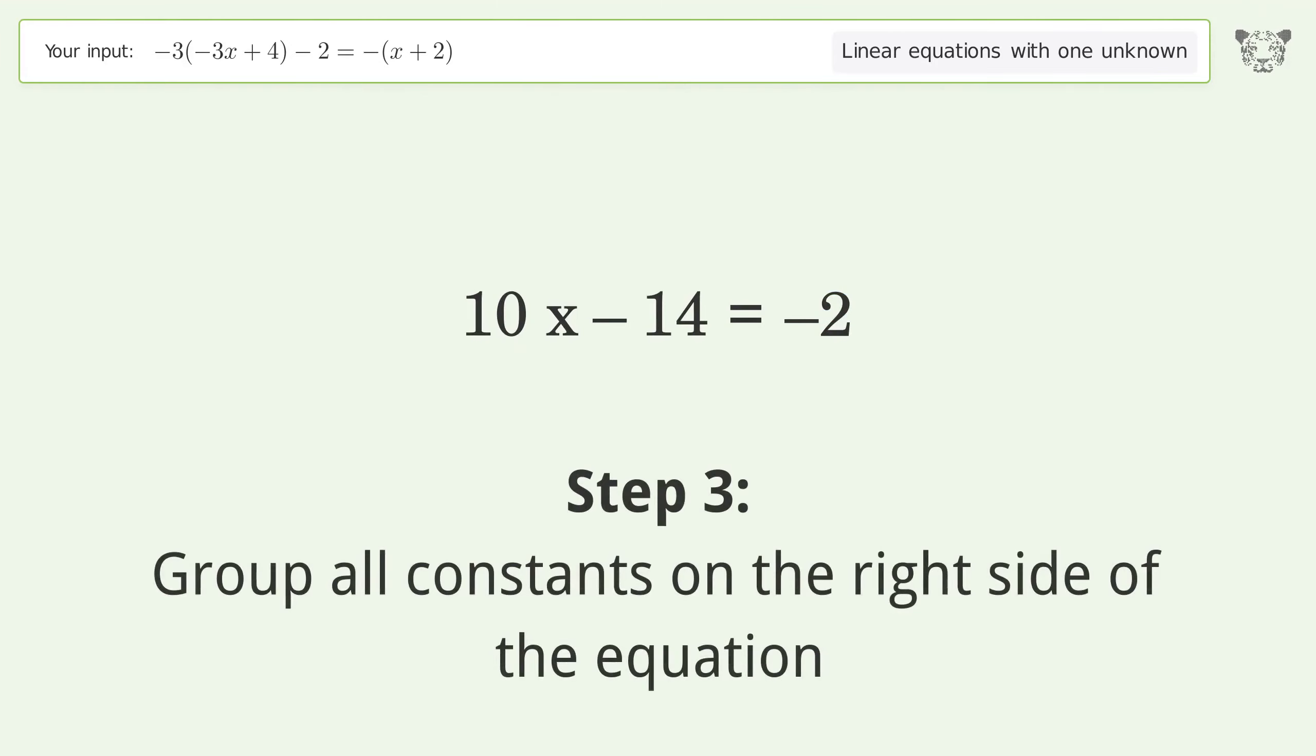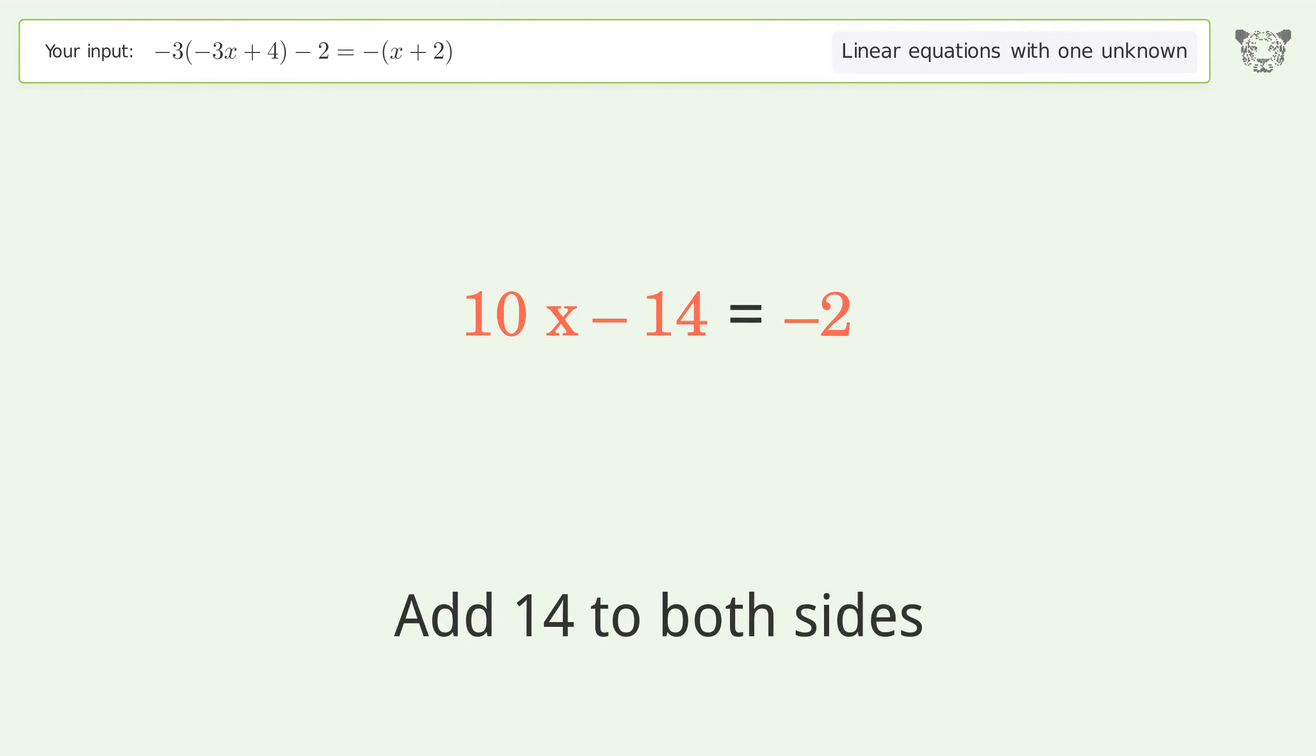Group all constants on the right side of the equation. Add 14 to both sides. Simplify the arithmetic.